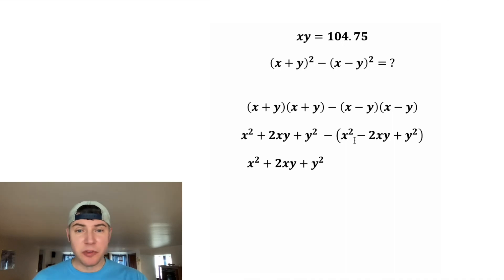For the next step, we can copy all this down. But for this one, the subtraction needs to get distributed to all three of those terms. So this is negative x squared, and then negative times negative makes this a positive. And then negative times positive makes it a negative y squared.